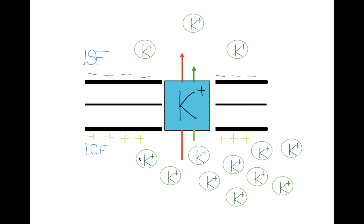Now when we open this potassium channel, there are going to be two gradients determining the movement of potassium. The first gradient is the concentration gradient, which favors the movement of potassium from inside the cell to the outside, symbolized by the red arrow. The second gradient determining potassium movement is the electrical gradient. Since there is more positive charge on the inside of the cell than the outside, the positive charge will repel the potassium outward. So both a concentration gradient and an electrical gradient favor the movement of potassium outside the cell.